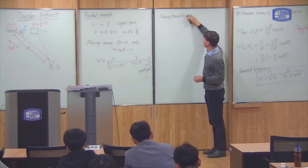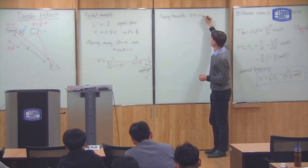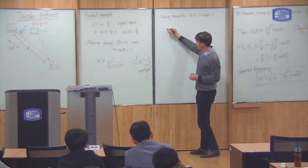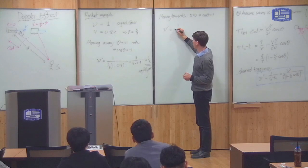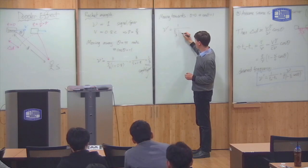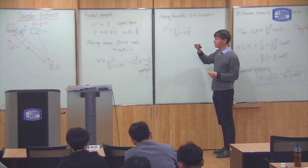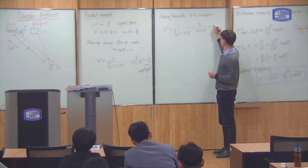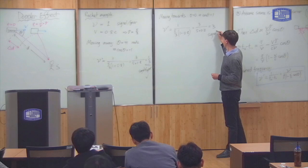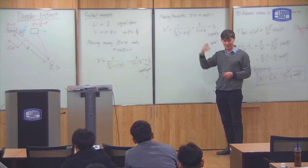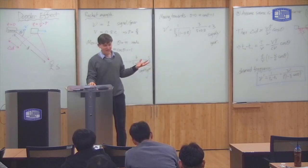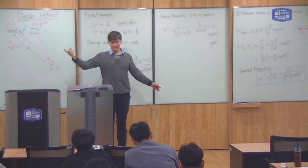If the source is moving towards you, then the angle theta is zero, so cos theta equals one. By the same token, the observed frequency nu prime is one over five-thirds times (1 minus 0.8), which is three divided by five times 0.2, giving three signals per year. When moving towards, the signals get three times faster — which is what we found. So we've checked that our general formula for the Doppler effect works in this example.